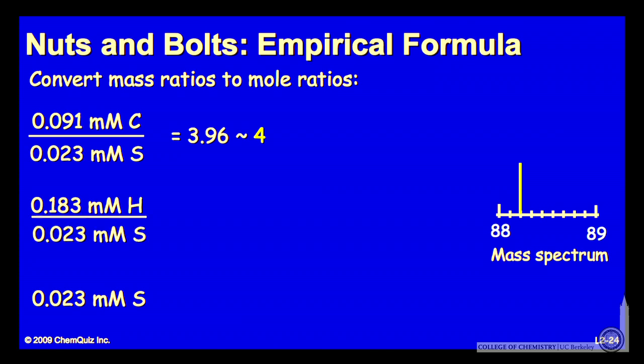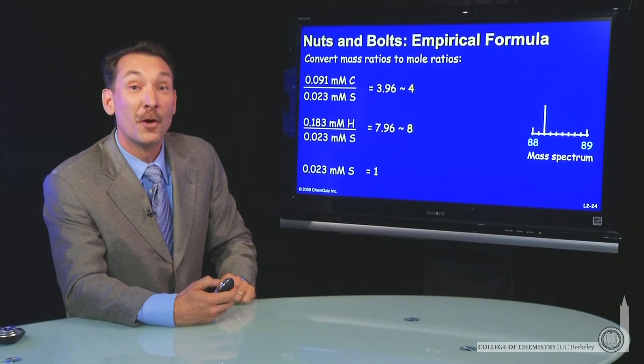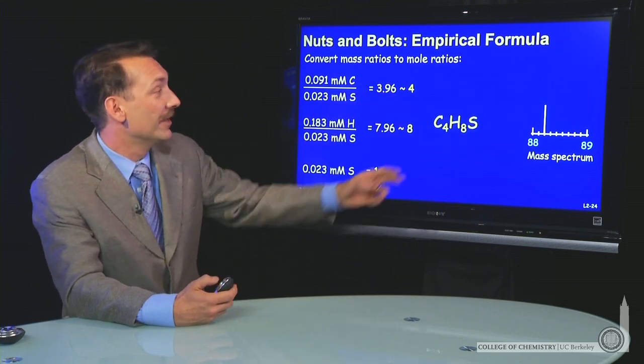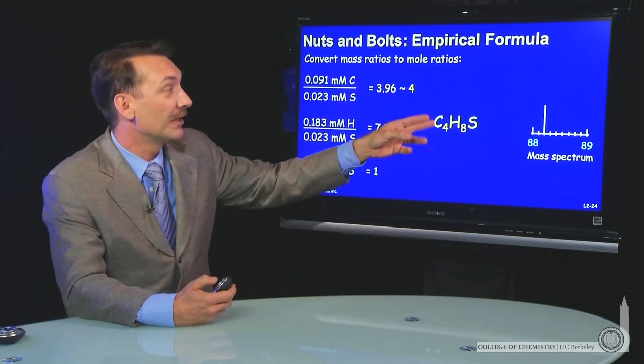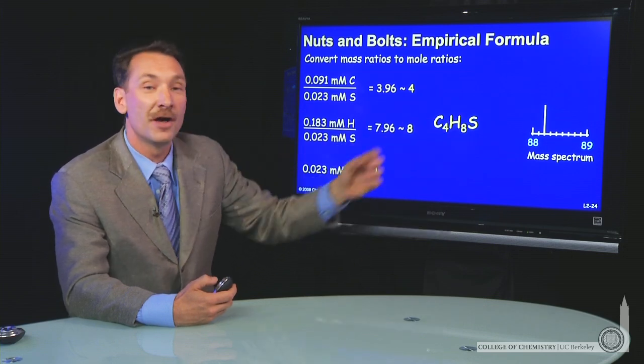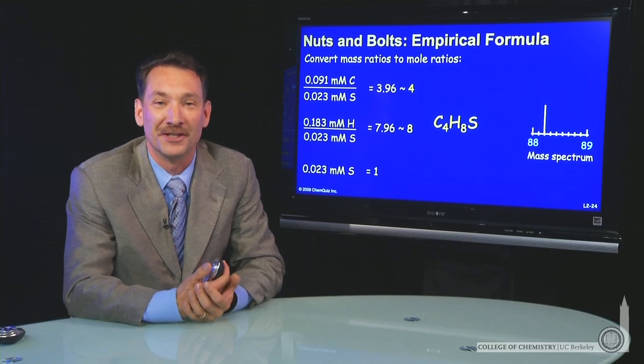Ratio of 1 to 4. The millimoles of hydrogen, it's about 8, 1 to 8 sulfur to hydrogen ratio. And of course, 1 to 1 sulfur to sulfur ratio. So the molar ratios are 1 to 8 to 4 in this compound. The empirical formula, 4 carbon atoms to every 8 hydrogen atoms to every 1 sulfur atom. That's the empirical formula.